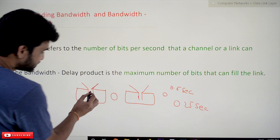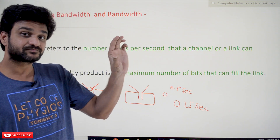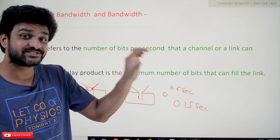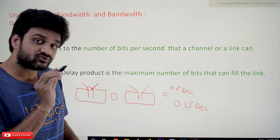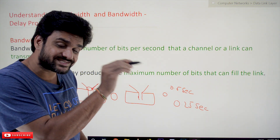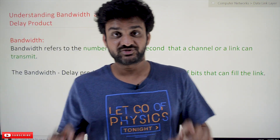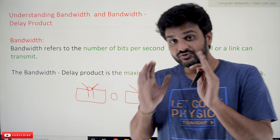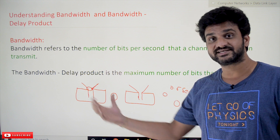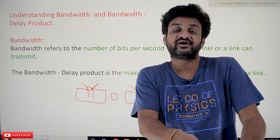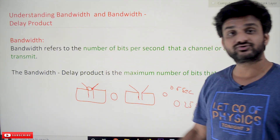This diameter of the funnel is what we call the bandwidth of the communication channel — the wire through which bits are transmitted per second. It is not the speed of the channel; that differentiation is very important. As the diameter of the funnel increases, the rate at which water flows in is higher, meaning it takes less time to fill the container.